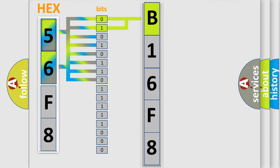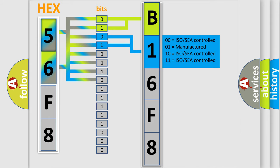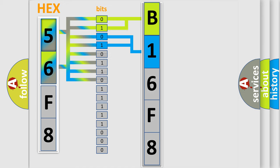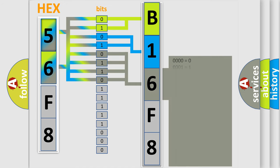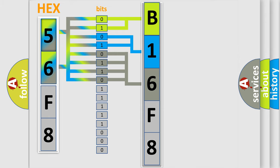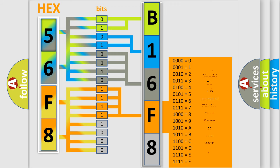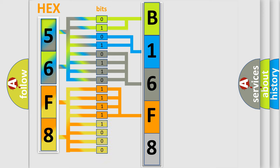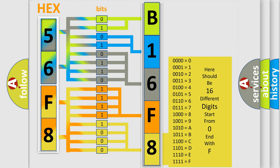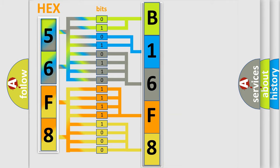The next two bits determine the second character. The last bits of the first byte define the third character of the code. The second byte is composed of a combination of eight bits. The first four bits determine the fourth character of the code, and the combination of the last four bits defines the fifth character. A single byte conceals 256 possible combinations.